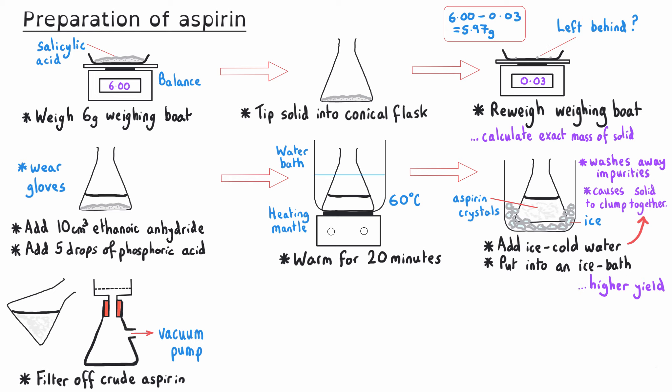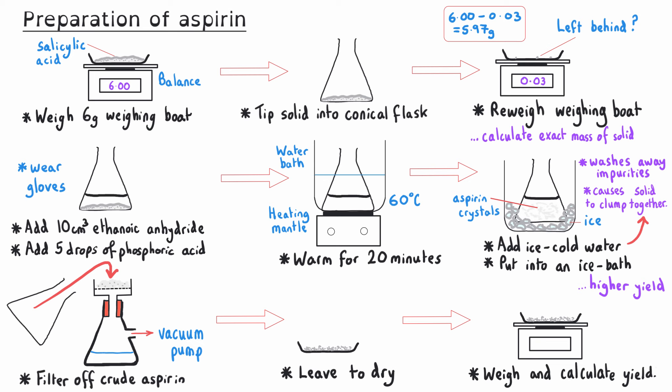The next stage is to separate our crude aspirin through filtration, since we've got our aspirin product suspended in our reaction mixture. Vacuum filtration or filtration under reduced pressure is preferable to gravity filtration. Having done that, we leave our crystals to dry either on the filter itself, allowing the vacuum to gradually dry them, or somewhere warm in the room. The final stage is to weigh this crude aspirin and calculate an early percentage yield, knowing that we will probably need to further purify it and calculate that yield again afterwards.